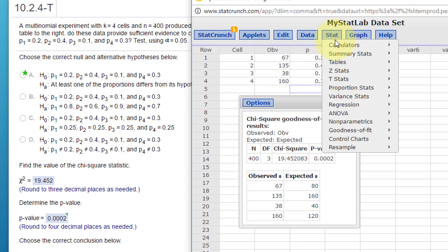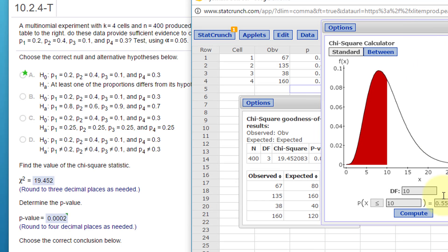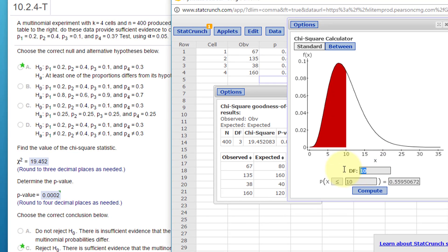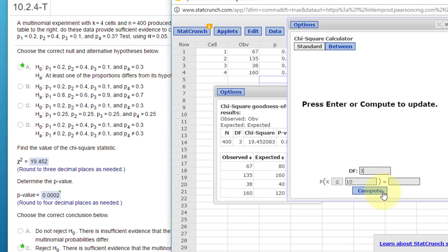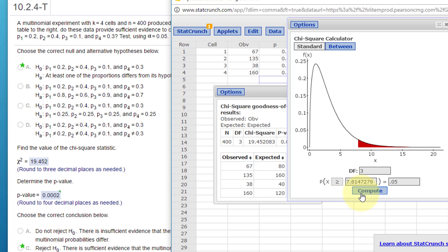But just for fun, let's go ahead and get the rejection region as well. We've got k=4, so that should be 3. Whoops, I've got to select my right tail, I clicked on the wrong thing there. And this is 0.05.